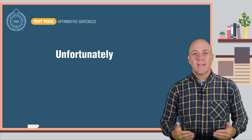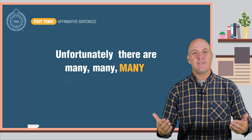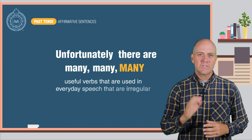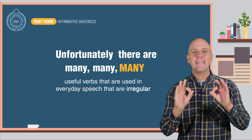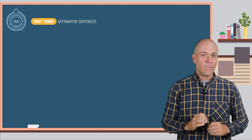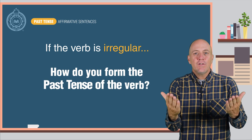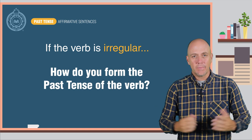Unfortunately, there are many useful verbs that are used in everyday speech that are irregular. So, if the verb is irregular, how do you form the past tense of the verb?